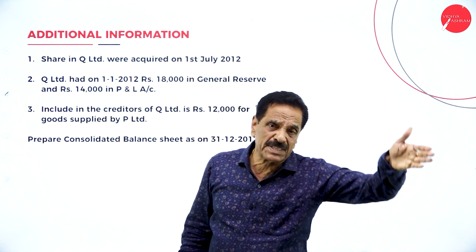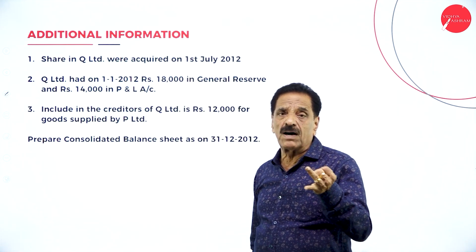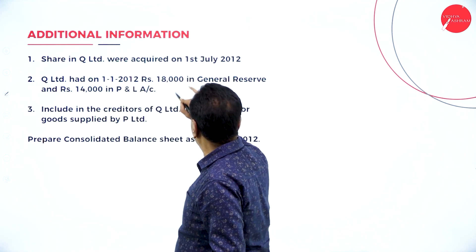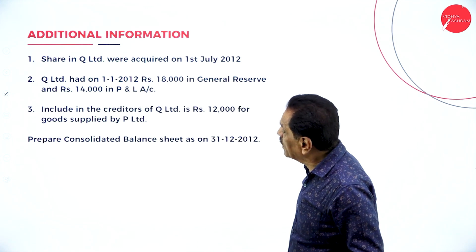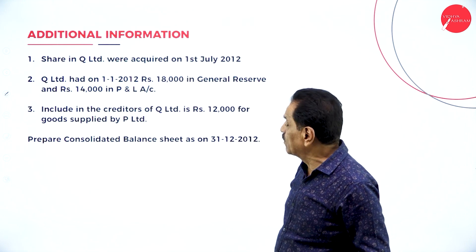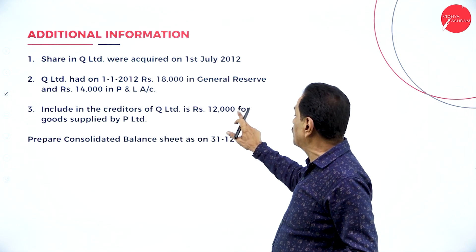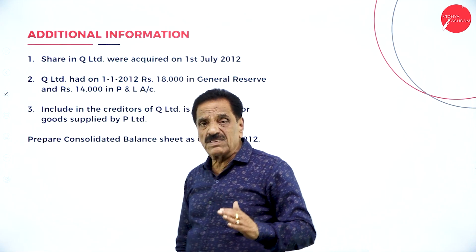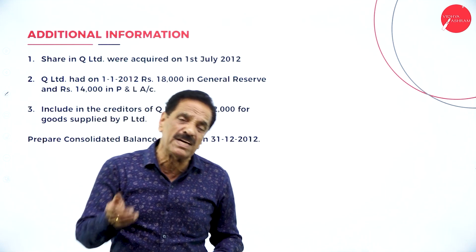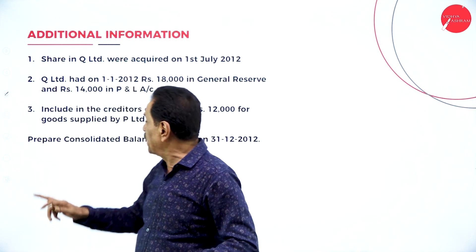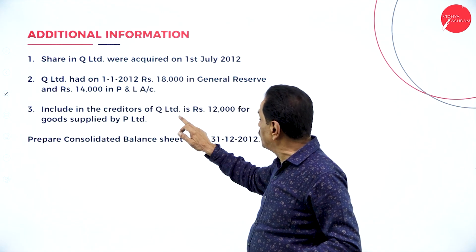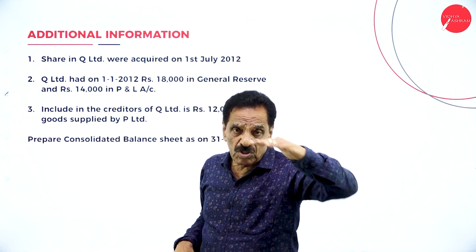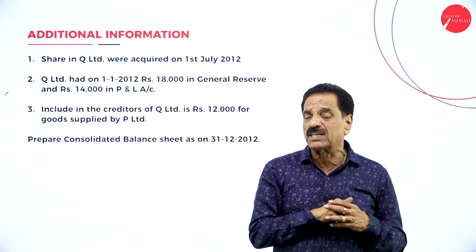Starting from January and ending in December: January, February, March, April, May, June — that is 6 months. Q-Limited had a general reserve of 18,000 and profit and loss account of 14,000. Included in the creditors of Q-Limited is 12,000 for goods supplied by P. So P supplied goods to Q-Limited on credit.